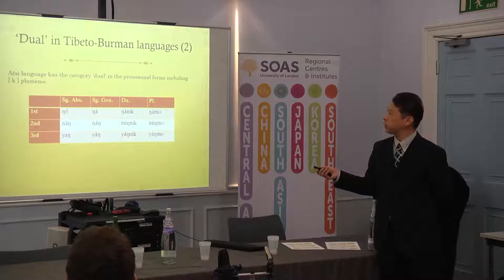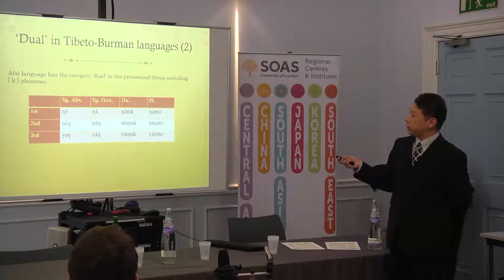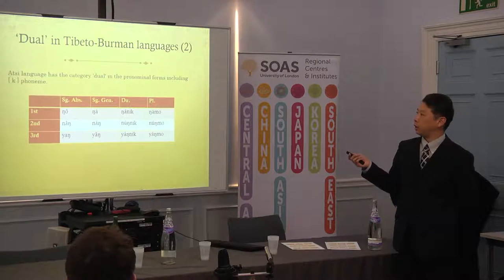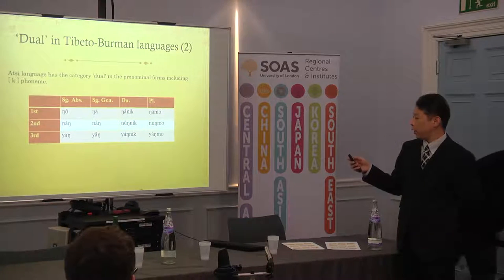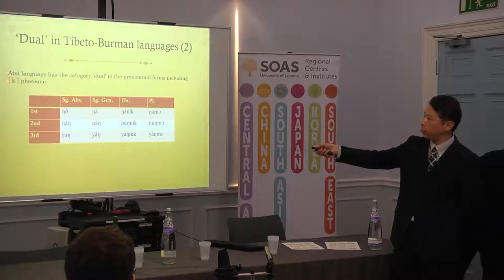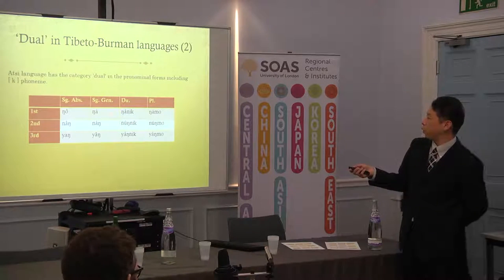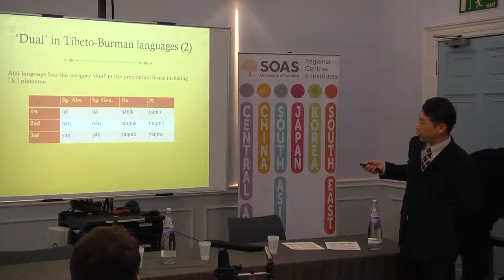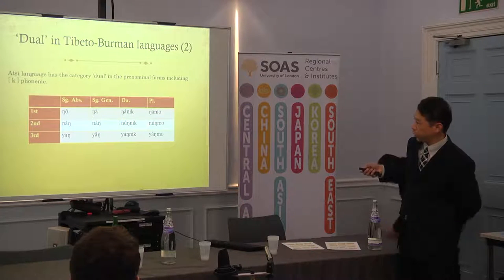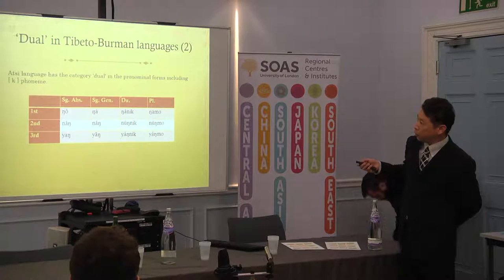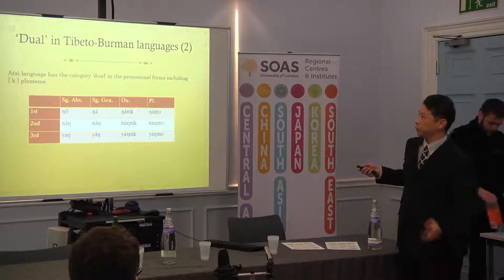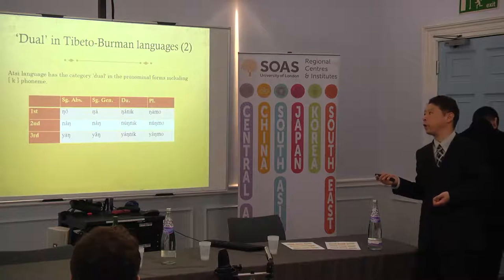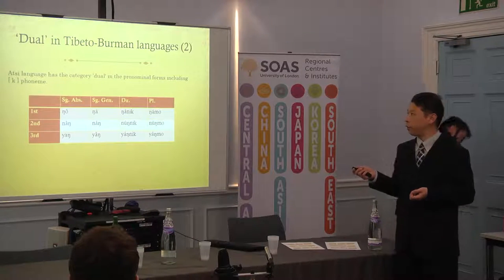The next example — I think these are not perfect samples, but some language has a category of dual in pronominal forms, including a K-morpheme. Please see this — the pronominal and the real term 'NANIK', 'NANIK', 'NANIK', 'NANIK'. So all the forms of dual pronominals in the Atsi language have been described as a dual marker.